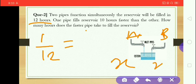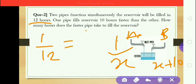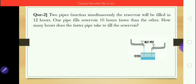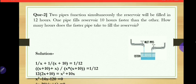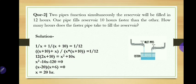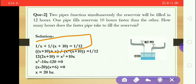The slower pipe takes x plus 10 hours, and it is asked how many hours the faster pipe takes to fill the reservoir — that is x. Since both pipes are filling, we use a plus sign for both. One upon x is the part filled by the faster pipe in one hour, plus 1 upon x plus 10 for the slower pipe, equals 1/12, the part filled by both in one hour.